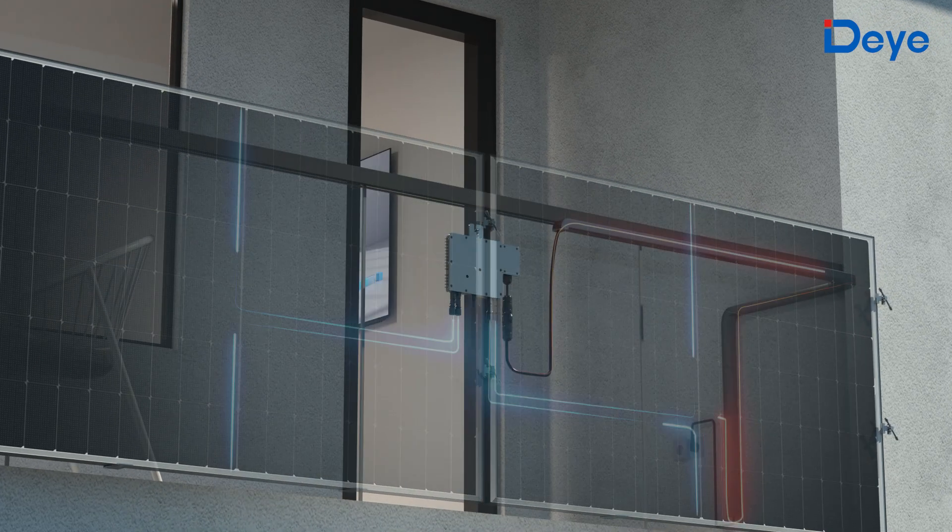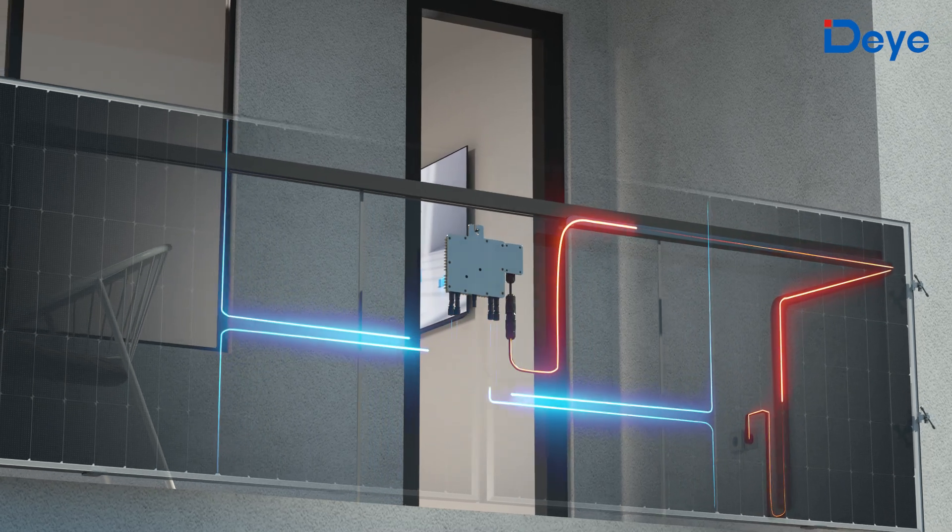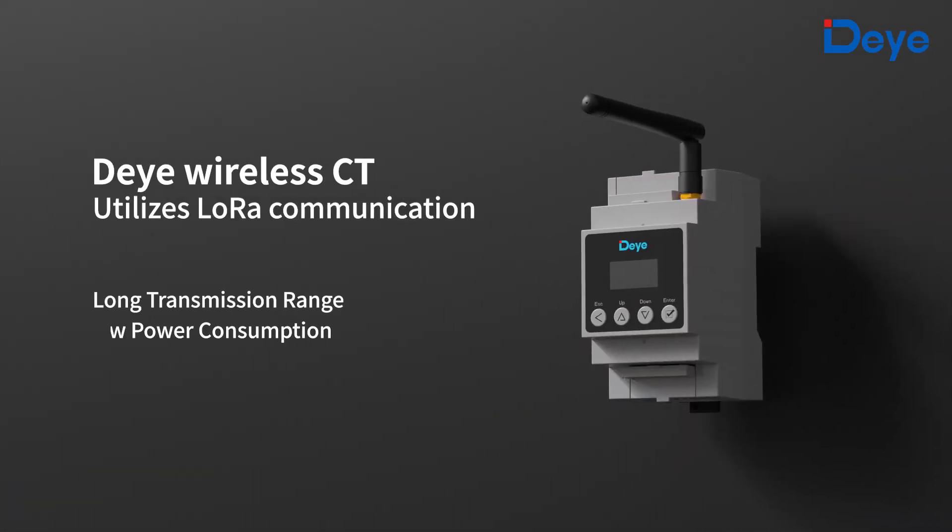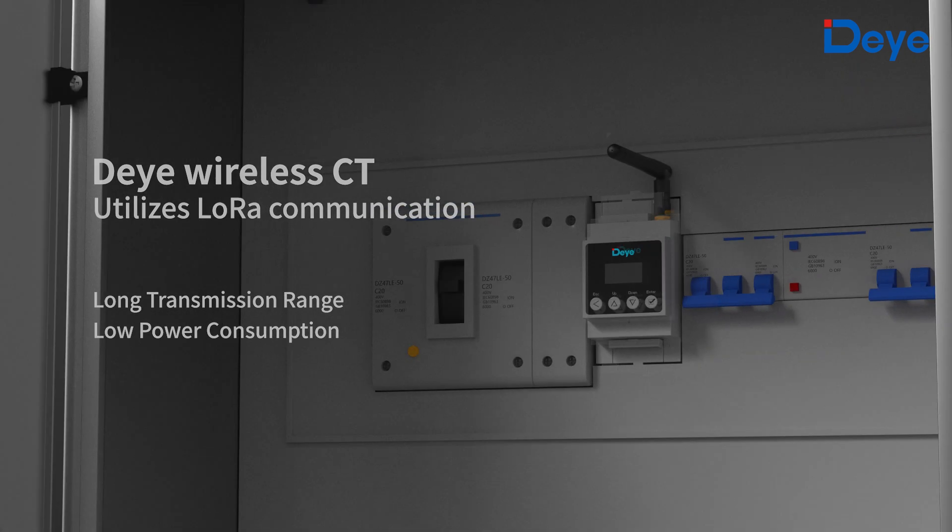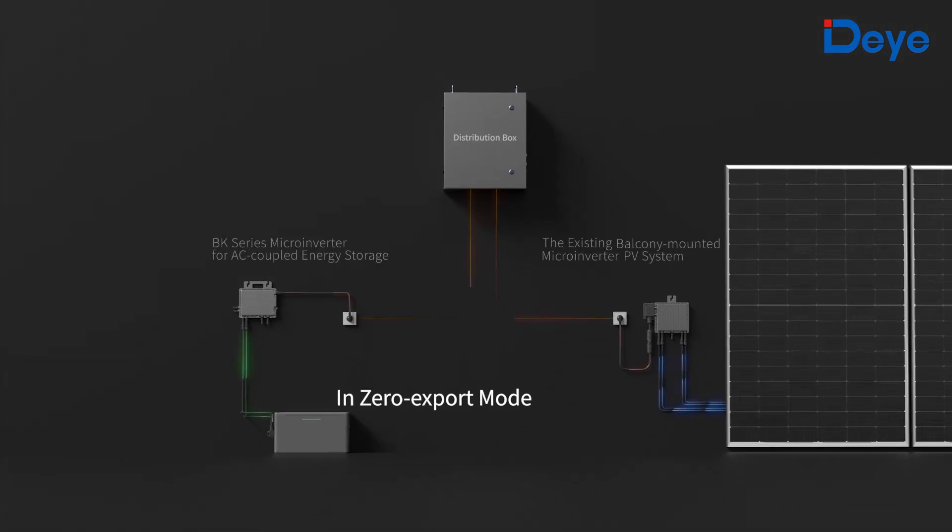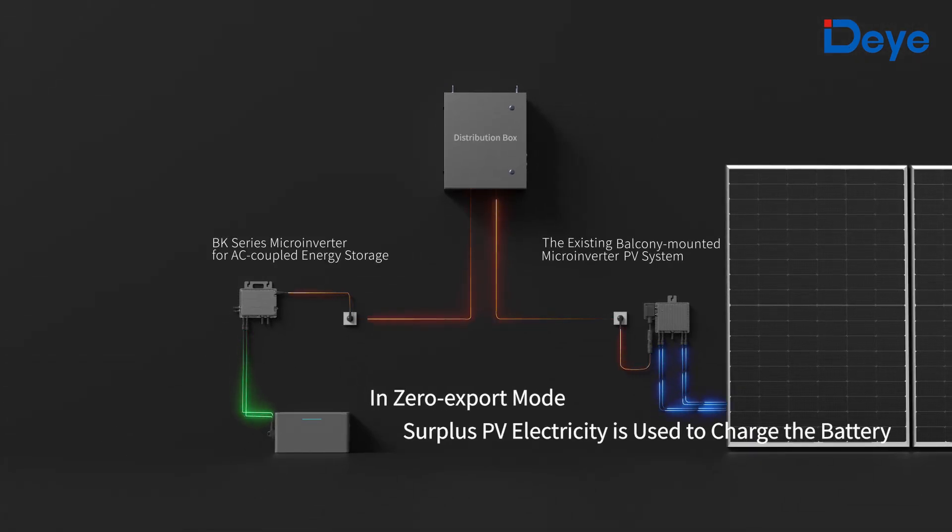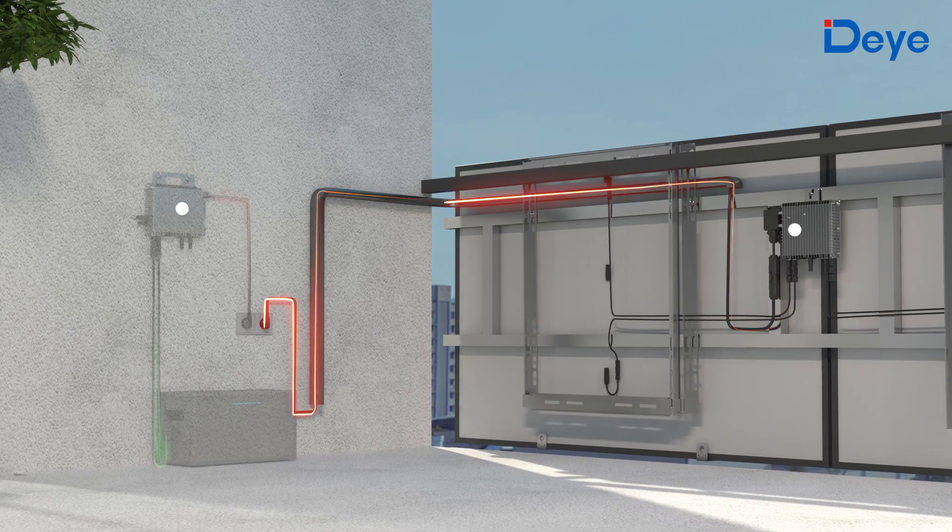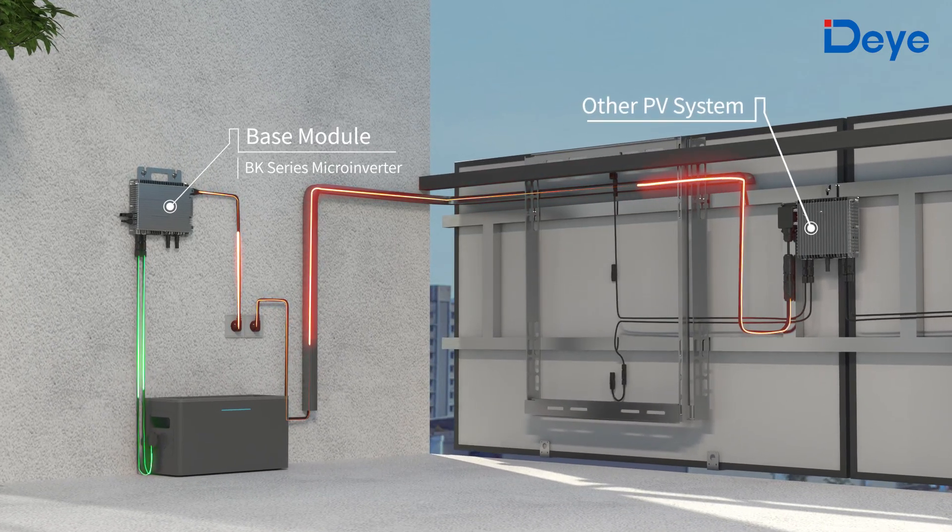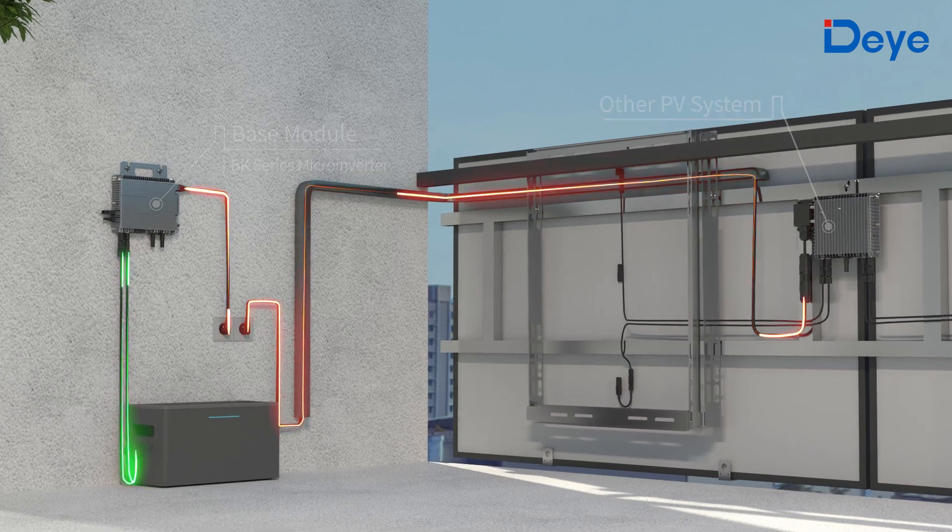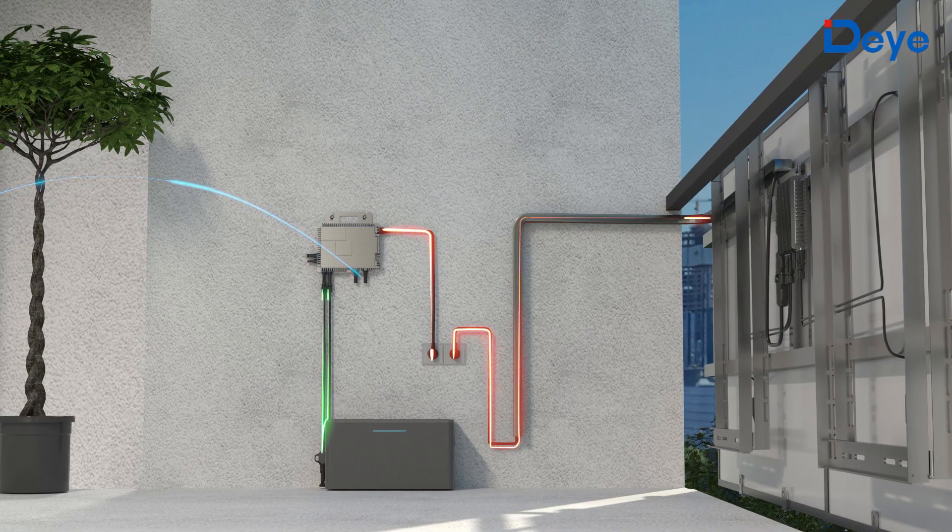If you already have a balcony photovoltaic or other solar generation system equipped with the wireless zero export solution based on DeYi wireless current transformer, the BK microinverter can retrofit the existing photovoltaic system to an energy storage system, no communication cable required. Utilize the excess power generated by other power generation systems to charge the battery.